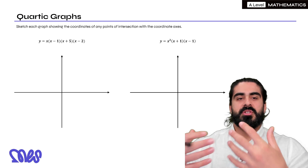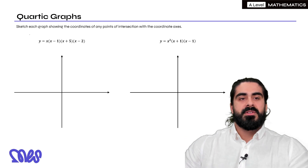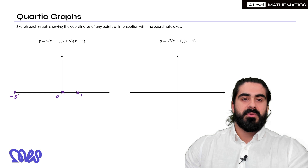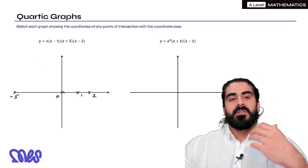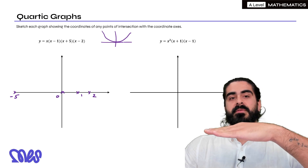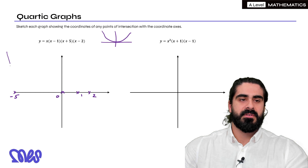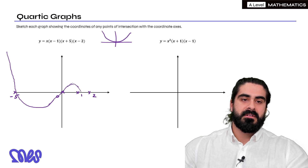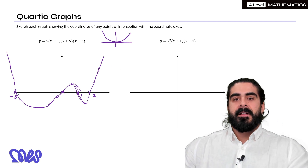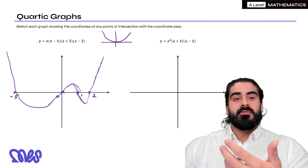Let's look at quartics. Similar principle — we just look at where it crosses the x-axis. So if you have x times x minus 1 times x plus 5 times x minus 2, the x gives a root of 0, then we'd have 1, then minus 5, and 2. Quartics look like quadratics in the sense they come from the top down and then back up — the only difference is quartics are a bit more flat at 0. So it's going to start from the top, come down, turn towards the other root, turn again to go through 1, turn again to go through 2, and make its way back up. Variations of the quartic look a bit like W shapes.